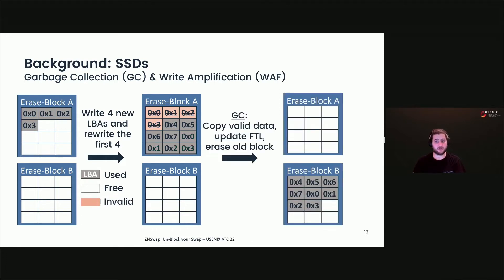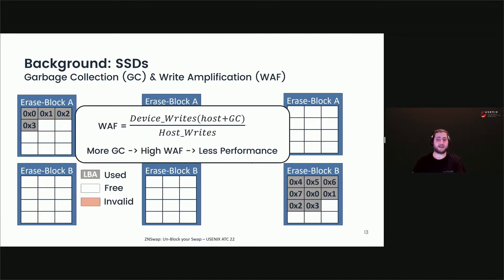To reclaim the available capacity occupied by invalid pages in erase block A, the SSD performs garbage collection. The operation copies only the valid pages within erase block A into a new erase block, erase block B, and erases erase block A. This also leads to the remapping of all copied pages within the FTL. The write amplification factor is the number of overall writes to the device divided by the number of writes actually issued by the host, including copies performed by garbage collection. A write amplification of one indicates no garbage collection, while a high write amplification factor indicates more internal writes by the garbage collector, which leads to lower device performance.